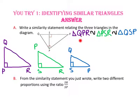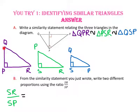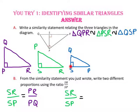In part B, we will use the similarity statement we just wrote to write two different proportions using the ratio of the length of segment SR to the length of segment SP. Since SR and SP are the long and the short leg of the medium triangle, we want to put the other ratio as the long and short leg of the big triangle and the long and short leg of the small triangle. In our first proportion, the length of segment SR to the length of segment SP is equal to the length of segment PR to the length of segment PQ. For our second proportion, using the long and short leg of the small triangle, we write the length of segment SP to the length of segment SQ.